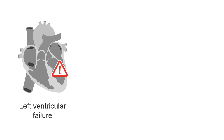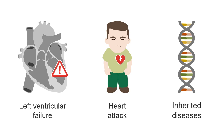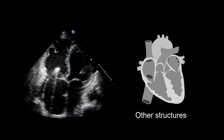Right ventricular failure may happen as a consequence of left ventricular failure, a heart attack, or inherited diseases affecting primarily the right heart. At this point, you can assess the other structures. For instance, in this image, you can see that the right atrium is significantly dilated.